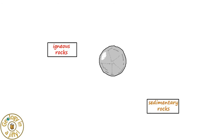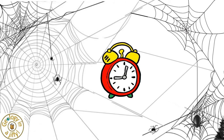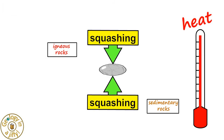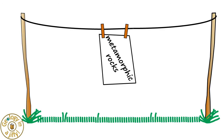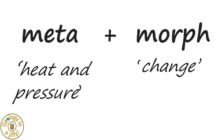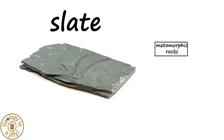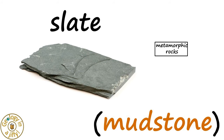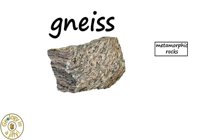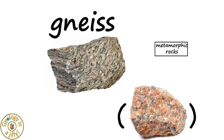Rocks — igneous or sedimentary, for example — can, over a long time, be heated and squashed. Further squashing, due to immense pressure inside our crust, can deform these rocks, forming metamorphic rocks, the third main group of rocks. The term metamorphic is made of two parts: morph means change, and meta comes from an ancient language and means heat and pressure. Slate is a metamorphic rock, formed from the metamorphism of mudstone, a sedimentary rock. Gneiss is a metamorphic rock, formed from the immense metamorphism of rocks such as granite.